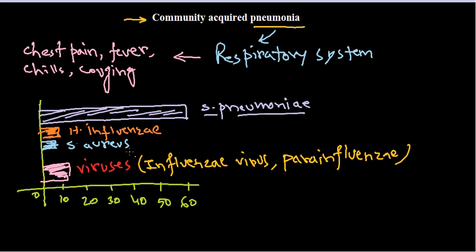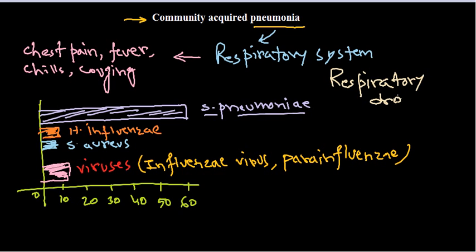For this pneumonia to establish, all these pathogens share one important common feature: the transfer from one person to another. In almost all cases, this is via respiratory droplets — meaning it is an exogenous route of transmission.